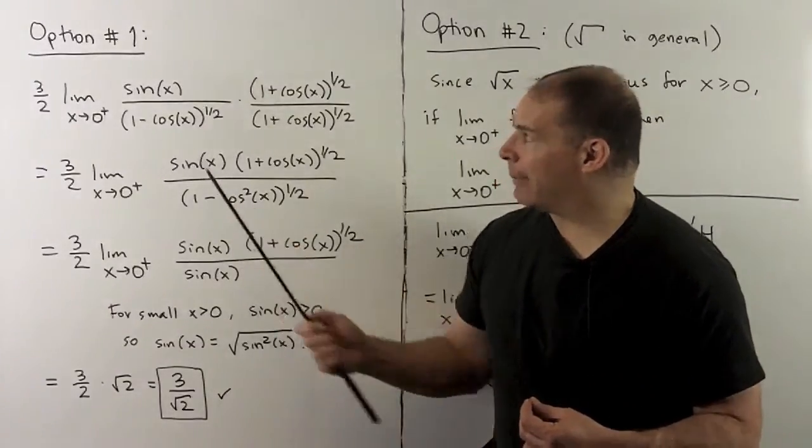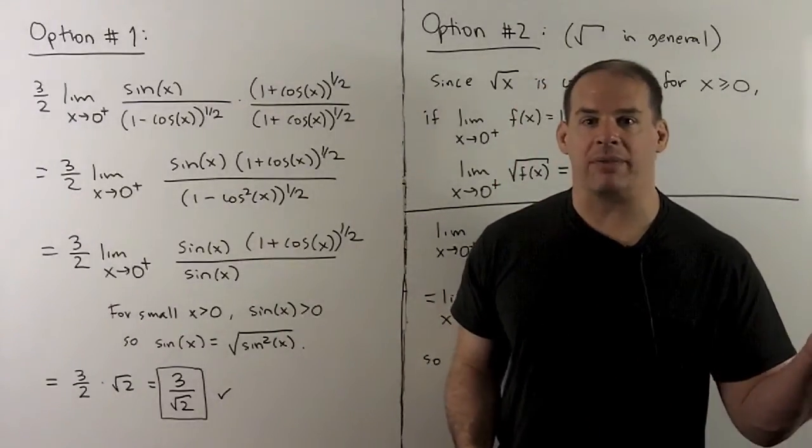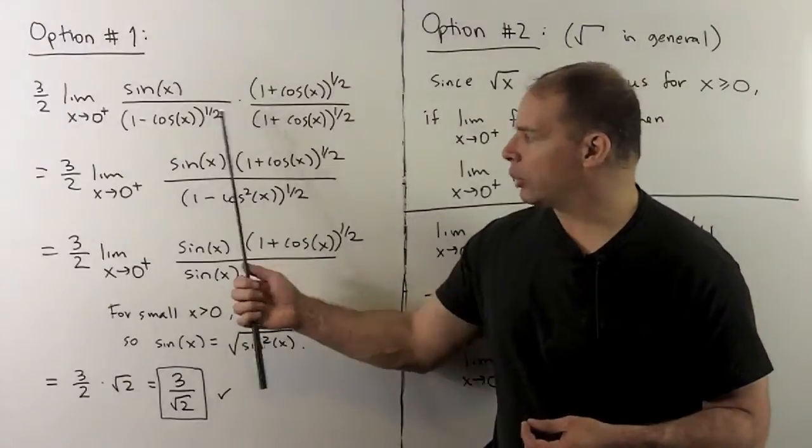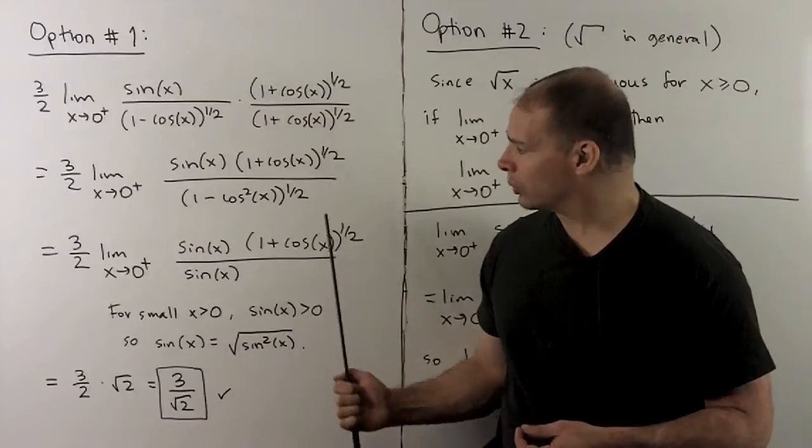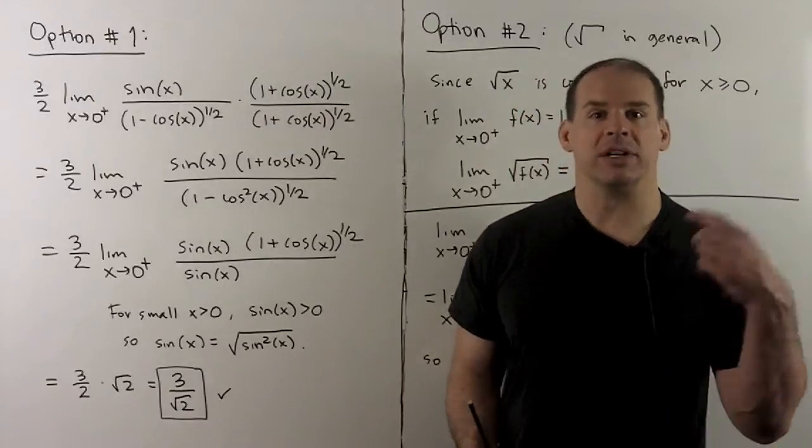We multiply by one plus cosine x to the one-half over itself. We work out the denominator as promised, so the sines cancel. We're left with one plus cosine x raised to the one-half.